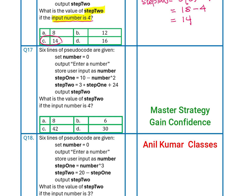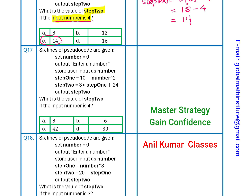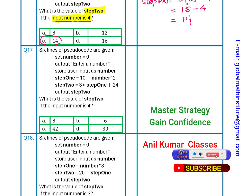Six lines of pseudocode: set number to zero, output enter a number, store user input as number. Step 1 equals 10 minus number squared. Step 2 equals 3 times Step 1 plus 24. Output Step 2. What is the value of Step 2 — the output — if the input number is 4? Pause and try it yourself.